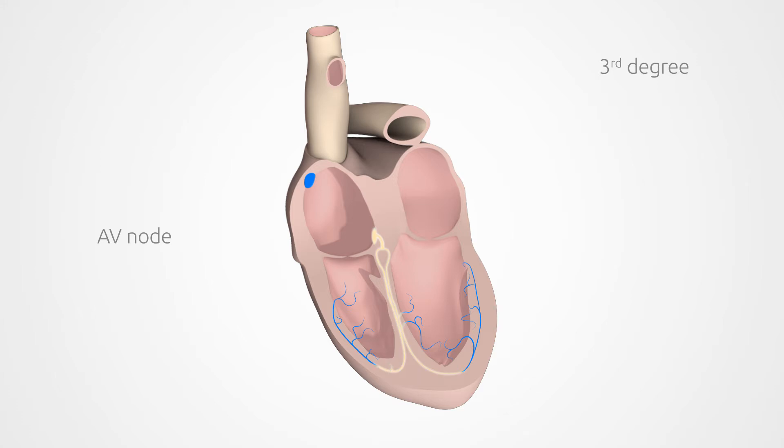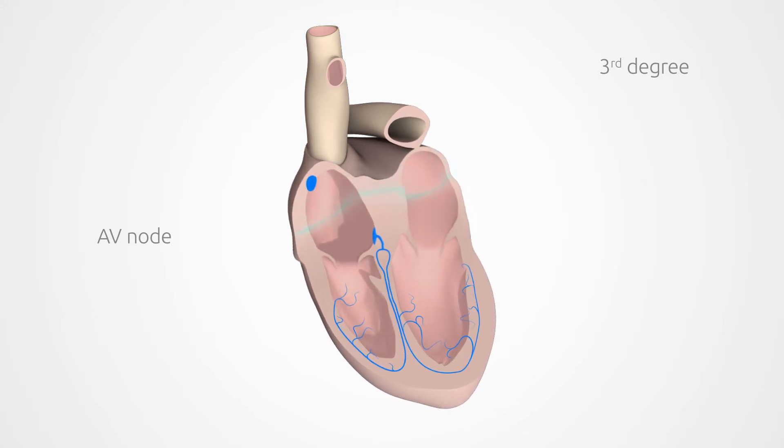Instead, the AV-Node takes on the role of the pacemaker. But then the heart only beats very slowly, at a rate of 40 beats per minute.